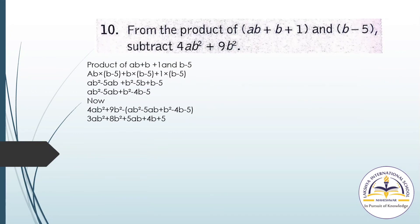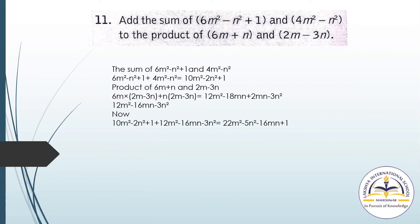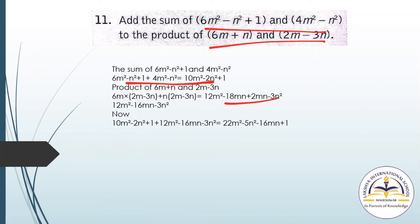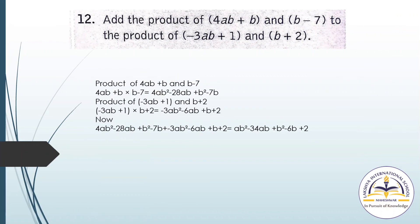Question number 10: Solve in the same manner. Question number 11: Add the sum of 6m² minus n² plus 1 and 4m² minus n², to the product of (6m plus n) and (2m minus 3n). Find the sum of the two expressions, which gives 10m² minus 2n² plus 1. Find the product, which gives 12m² minus 16mn minus 3n². Then add both results to get the final answer.